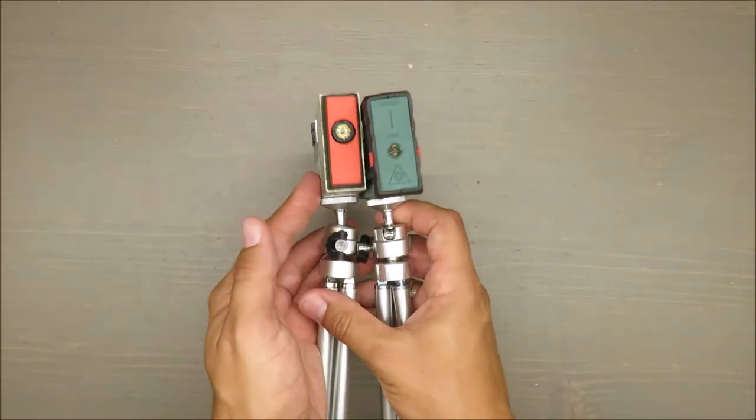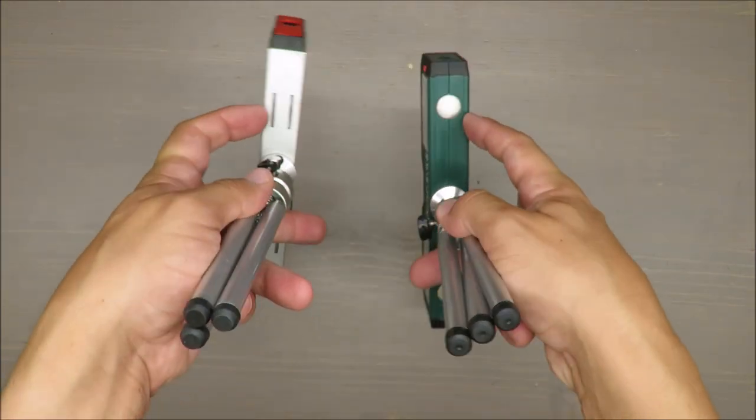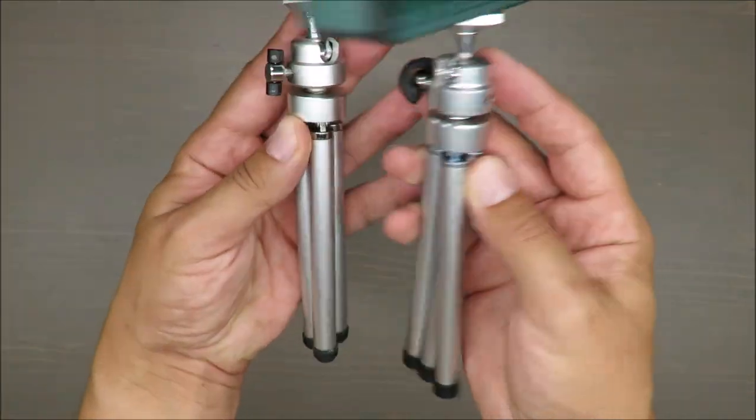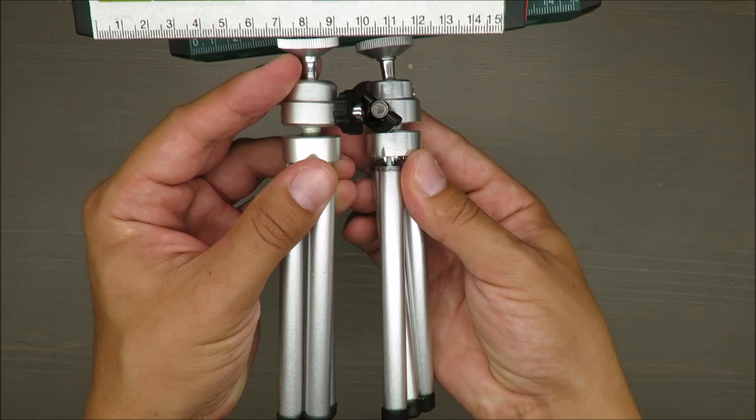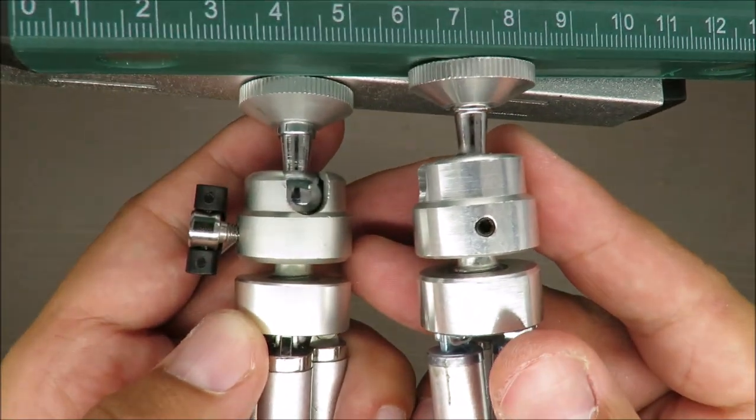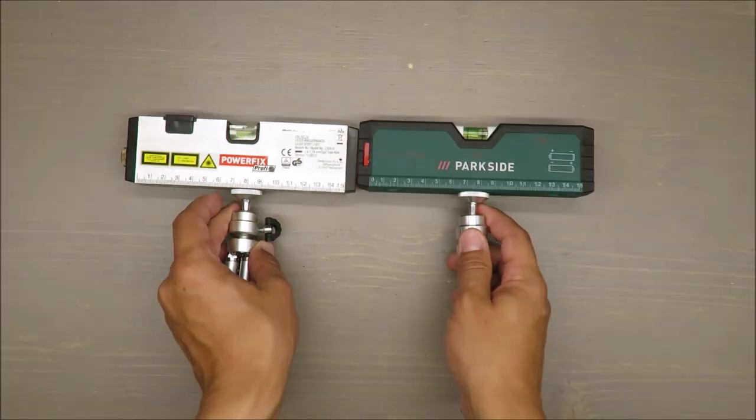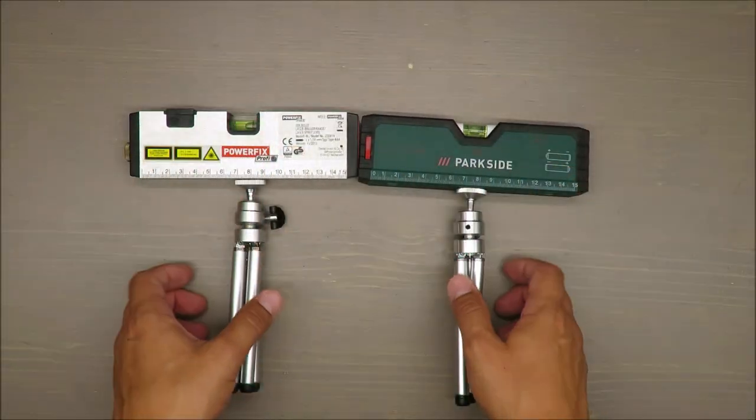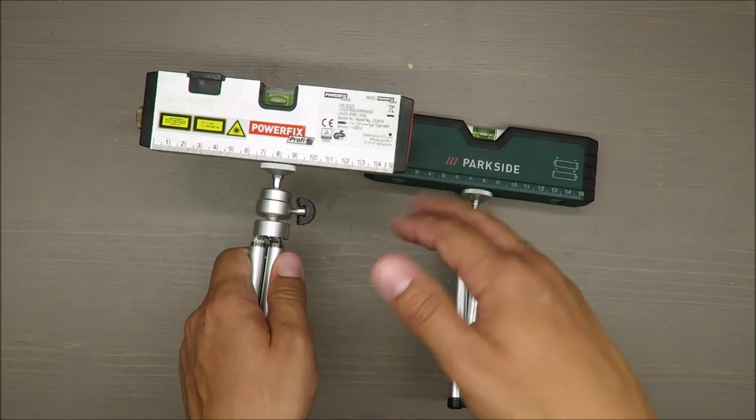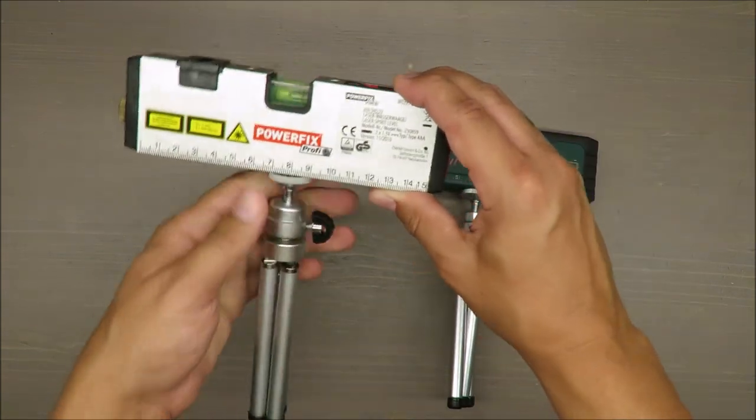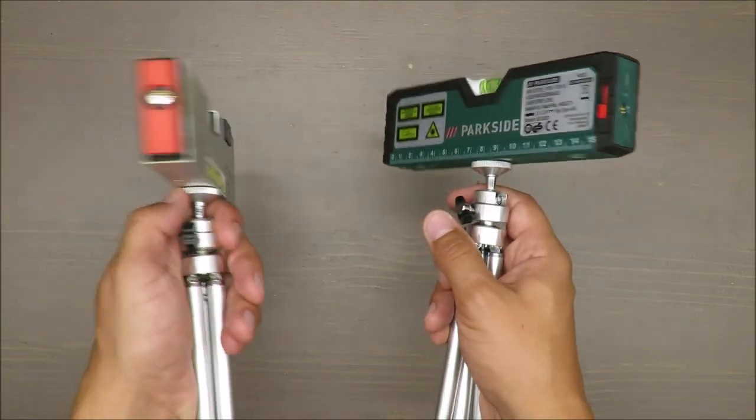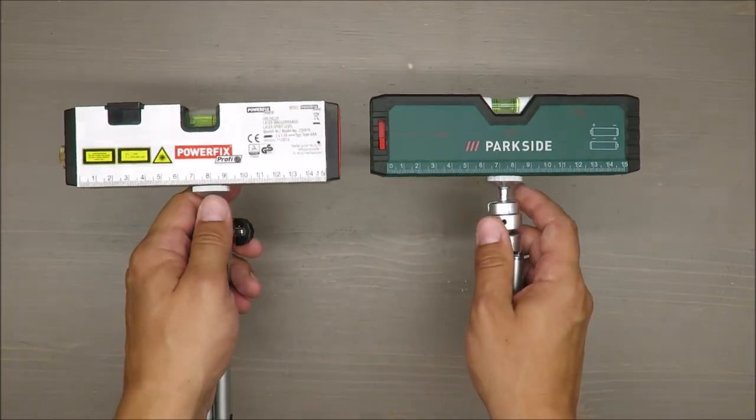They have magnets on the bottom as well. Those tripods are almost identical—you can spot some difference, but it's small. Despite the fact Lidl made this rebranding, because a few years ago all such DIY appliances were branded Power Fix, and Parkside was only for electric or cordless tools, now they've reshuffled the portfolio.